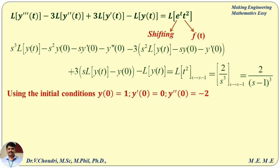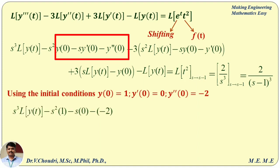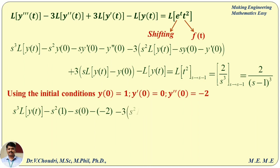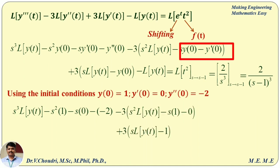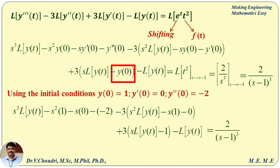Using the initial conditions y(0) = 1, y'(0) = 0, y''(0) = −2: substituting into the first derivative formula gives y(0) → 1, y'(0) → 0, y''(0) → −2. The second term contributes y(0) → −1, and the third term contributes y(0) → 1. The remaining terms stay as is.